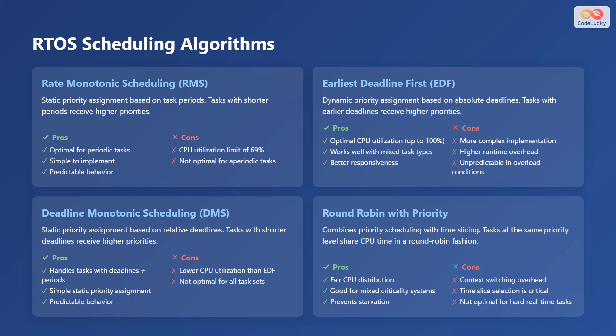Another algorithm is earliest deadline first, or EDF. It uses dynamic priority assignment based on absolute deadlines — tasks with earlier deadlines receive higher priorities. The advantages of EDF are optimal CPU utilization of up to 100%, works well with mixed task types, and provides better responsiveness. The disadvantages are a more complex implementation, higher runtime overhead, and unpredictability in overload conditions.